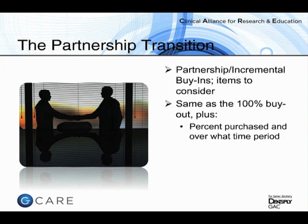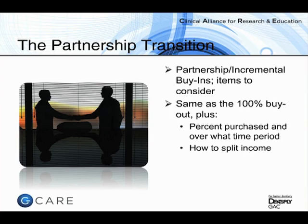Partnership arrangements can be expensive, so you need to understand what you're buying — it's not always an immediate 50%. Another key consideration is how to split income. When you buy a practice completely you get 100%, but as a partner there are different allocation methods: some based on days worked, some on ownership percentage, some with set salaries plus incremental increases. We've seen transactions where buyers come to us with deals that don't address how income is split — yet that's one of the main things you're buying when you buy into a practice.